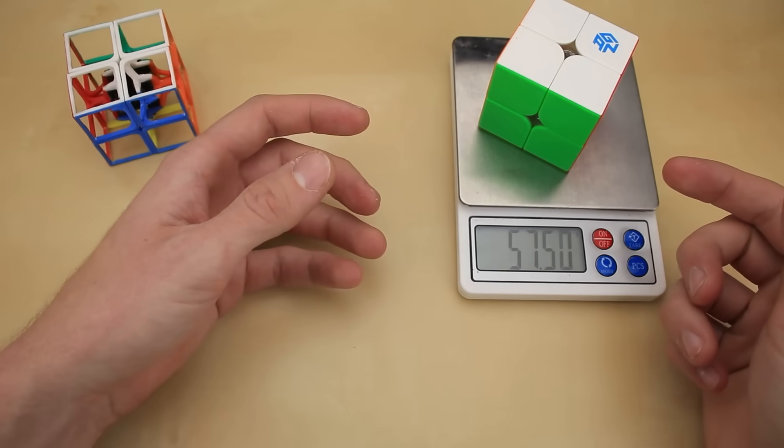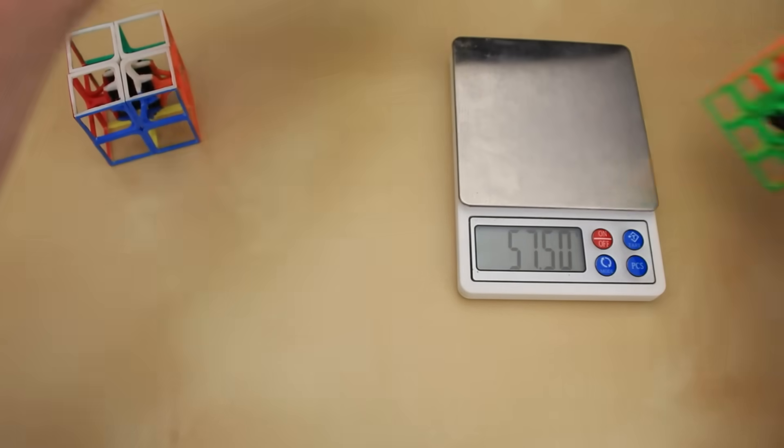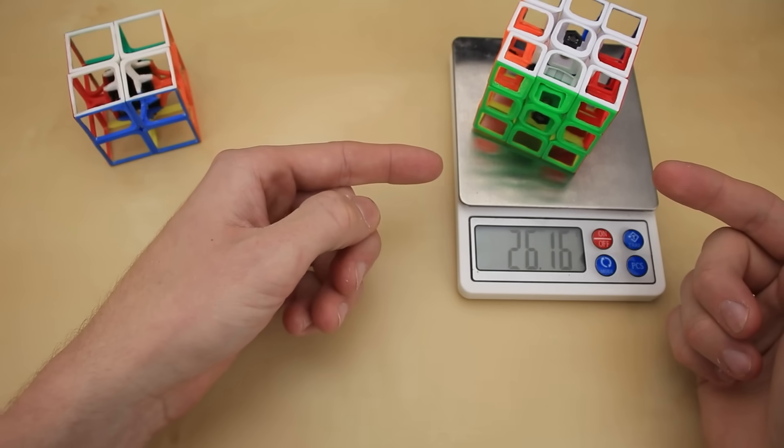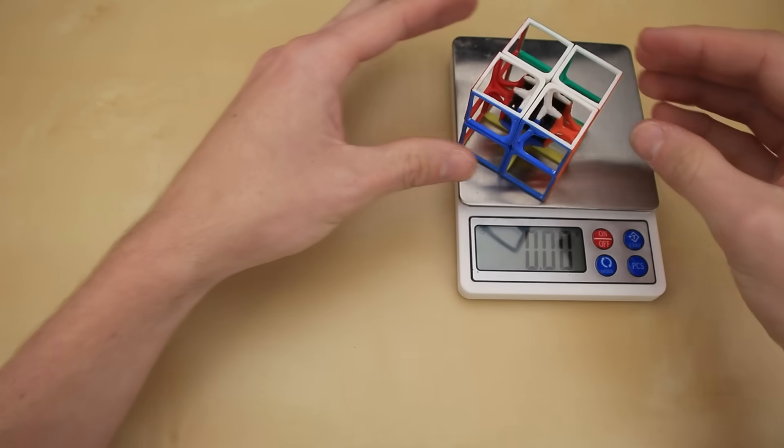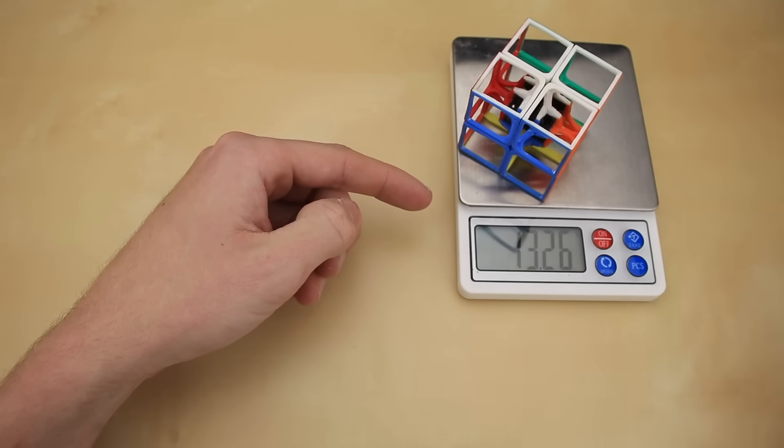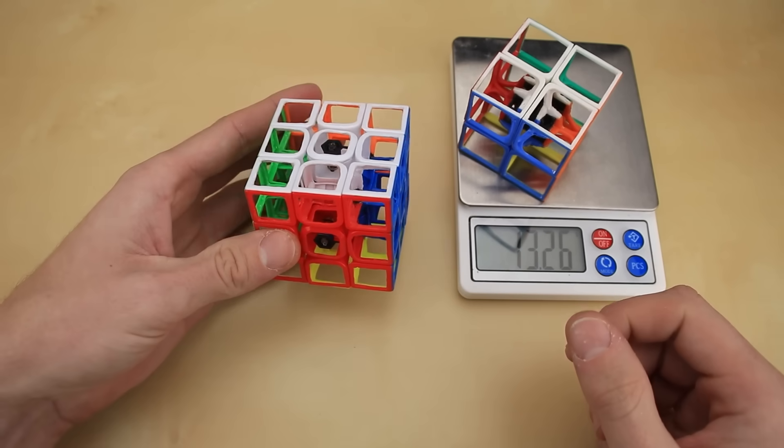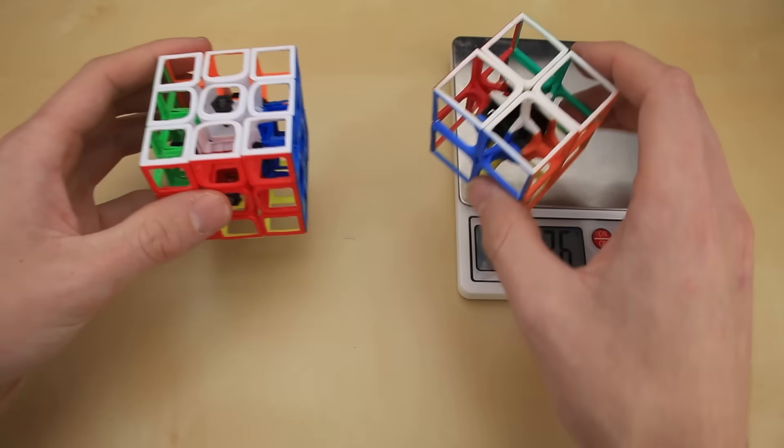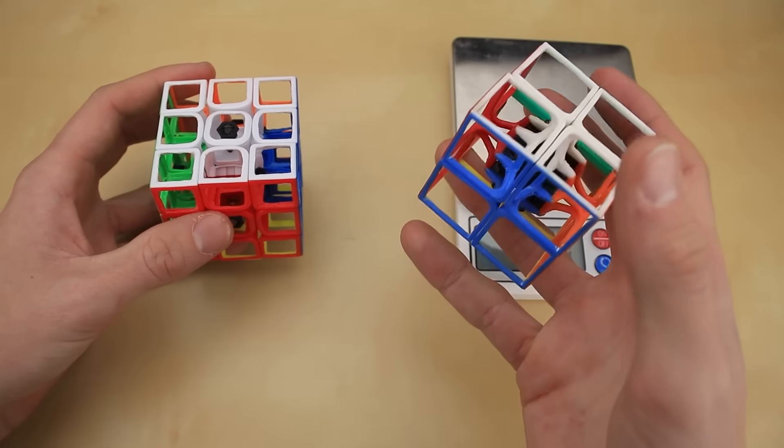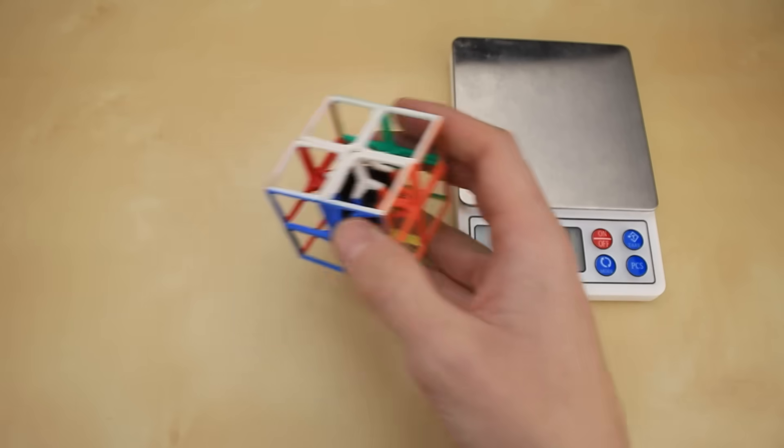Just to remind you, a normal 2x2 weighs 57 grams, and the world's lightest 3x3 weighs just 26, whereas the world's lightest 2x2 comes in at just 13 grams. Yes, that is basically half of the world's lightest 3x3. I really could not be happier with this weight. This one really just feels like a feather, even compared to the 3x3.